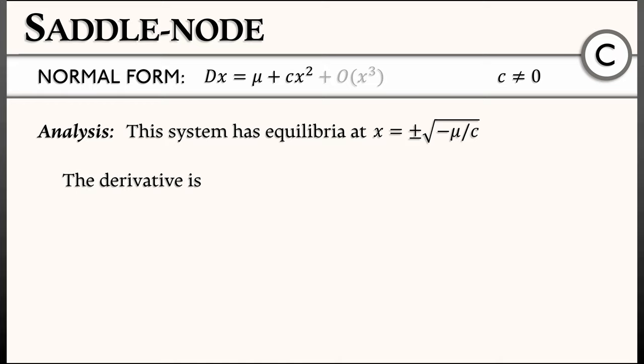For stability, what do we do? We take the derivative of the right-hand side. The derivative of mu plus cx squared equals 2 times c times x. Evaluating at the equilibria gives plus or minus 2c times square root of negative mu over c.